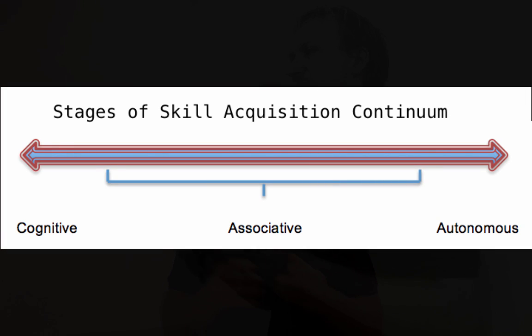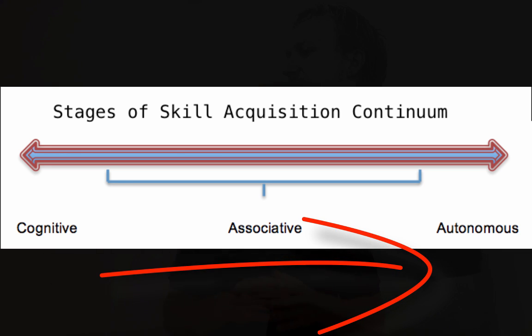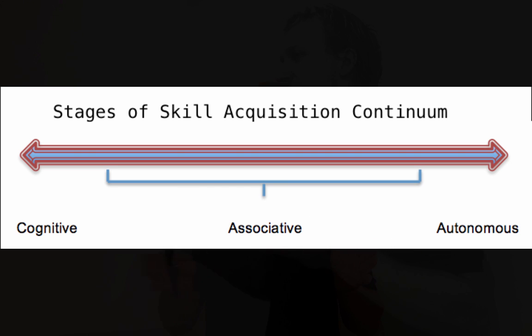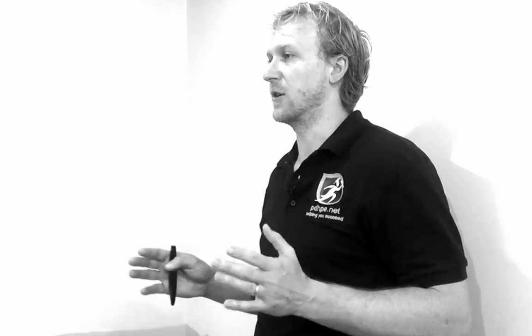This is a continuum — not a sudden shift from one stage to the next, but a slow progression. As athletes move through the associative stage, errors get less frequent and smaller. External feedback is still more beneficial here. Athletes do lots of whole practice and massed practice, meaning they practice the entire skill at once for extended periods.